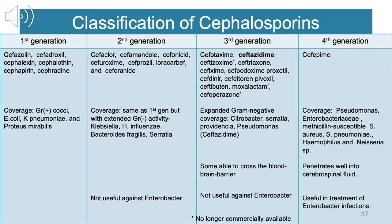Second-generation drugs include cefaclor, cefamandole, cefonicid, cefuroxime, cefprozil, loracarbef, and cefuroxime axetil. The coverage is the same as 1st generation but with extended gram-negative activity — including Klebsiella pneumoniae, Haemophilus influenzae, Bacteroides fragilis, and Serratia. This generation does not confer activity against Enterobacter.